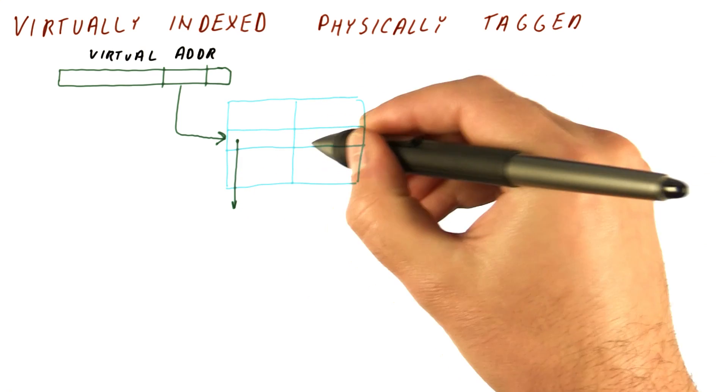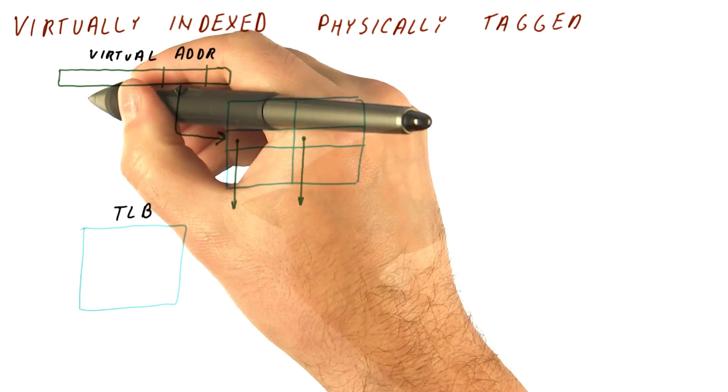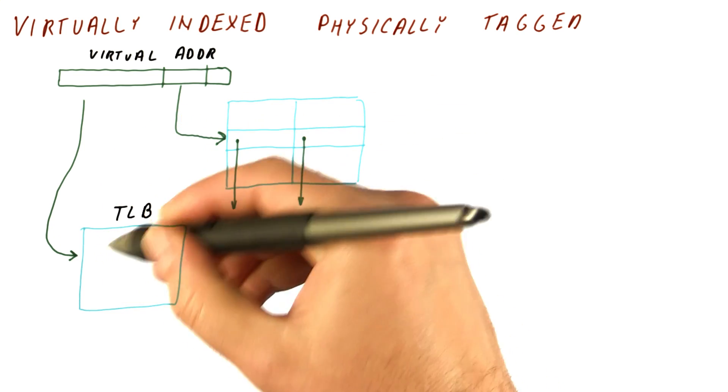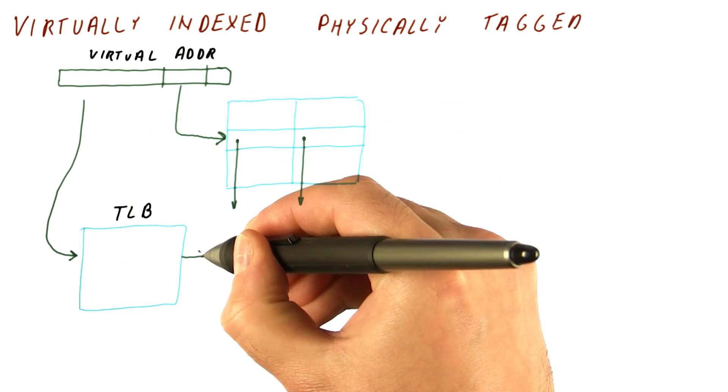We read the valid bits and the tags here, but meanwhile, we use the page number from the virtual address to access the TLB and get the frame number.